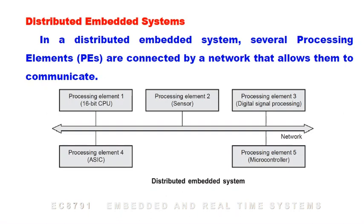Processing element 1 is a 16-bit CPU, processing element 2 is a sensor, processing element 3 is a digital signal processor, processing element 4 is an ASIC, and the 5th one is a microcontroller. These five are connected in a network system.